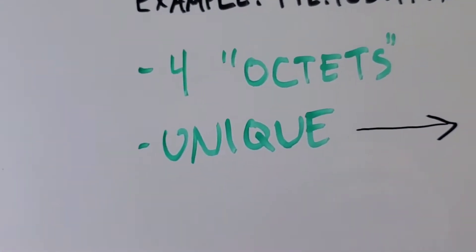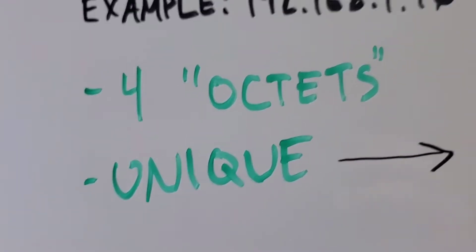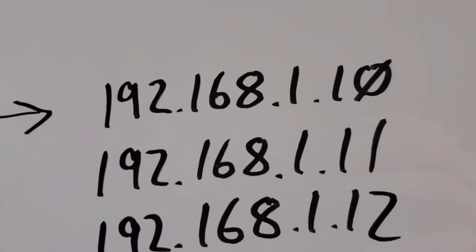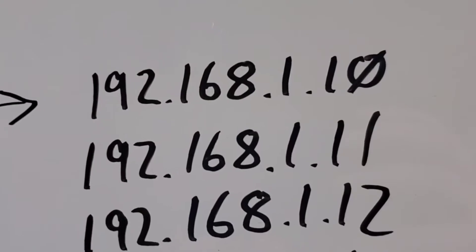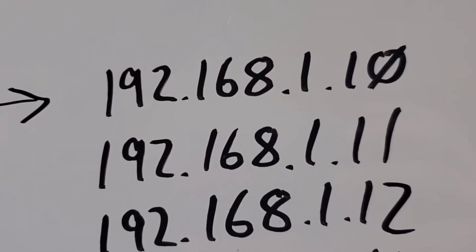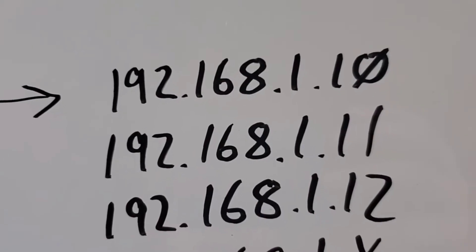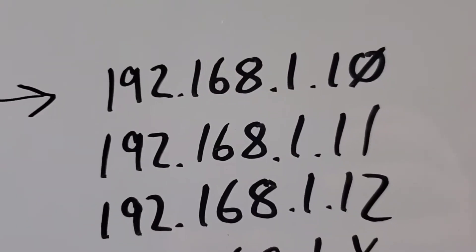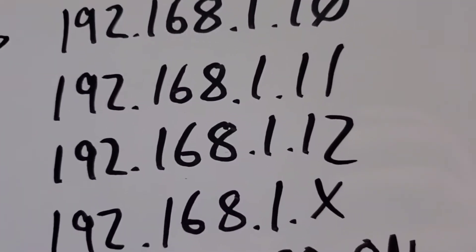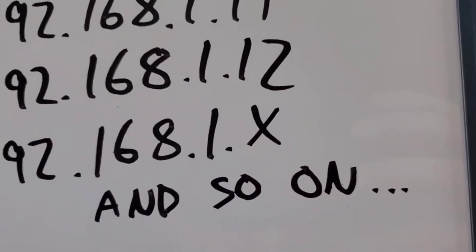Another important part is every IP address is unique on your network. For example, 192.168.1.10 could be the IP address of one device on your network. The next one could be 192.168.1.11, and then you can have .12 and .x and so on.